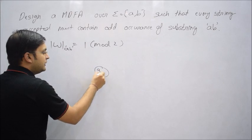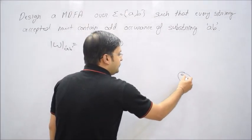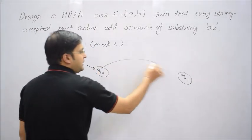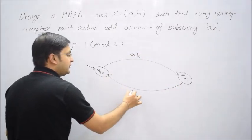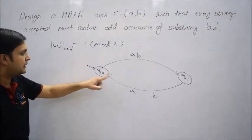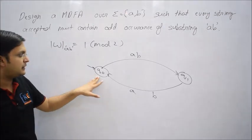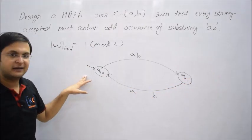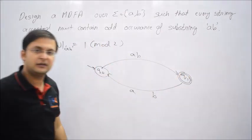Let me say q0 represents even and q1 represents odd. If AB comes, I will go to 1, and again if AB comes, then I will go back to q0. If I am on initial state, occurrence of the substring AB is 0, that is even number.